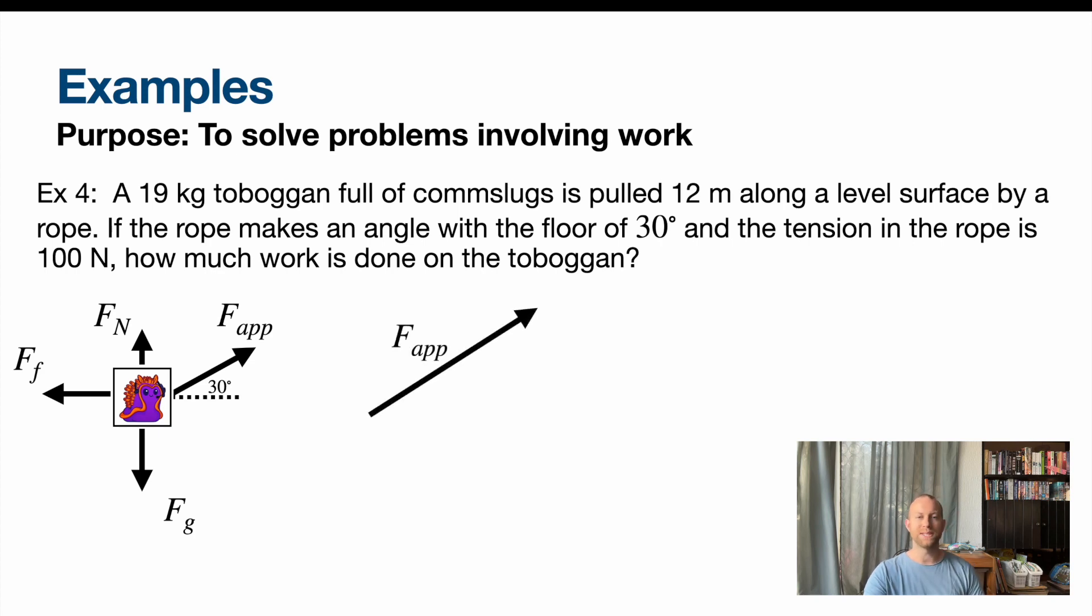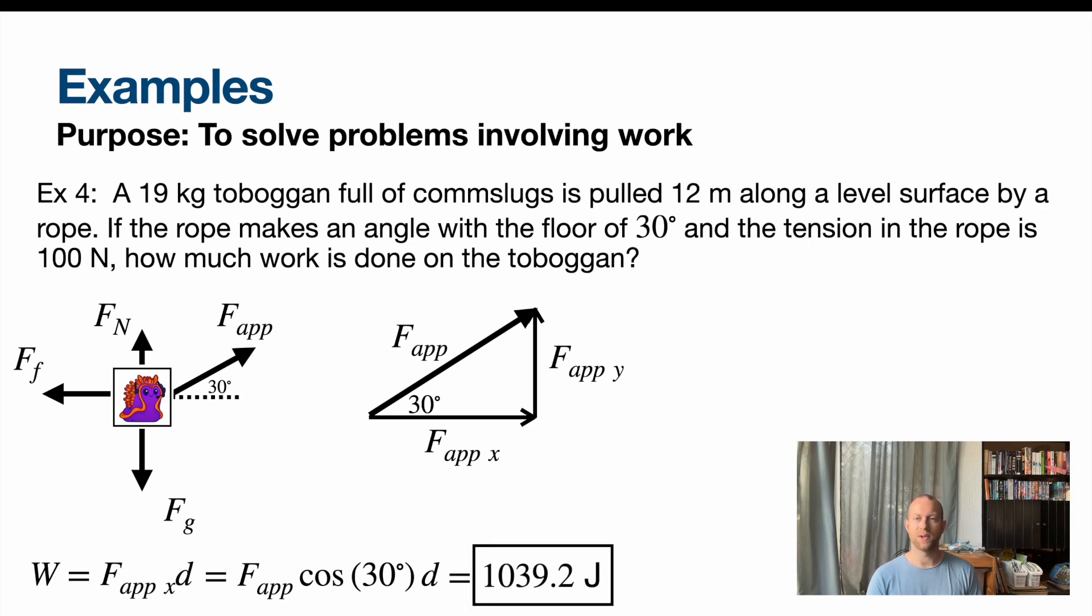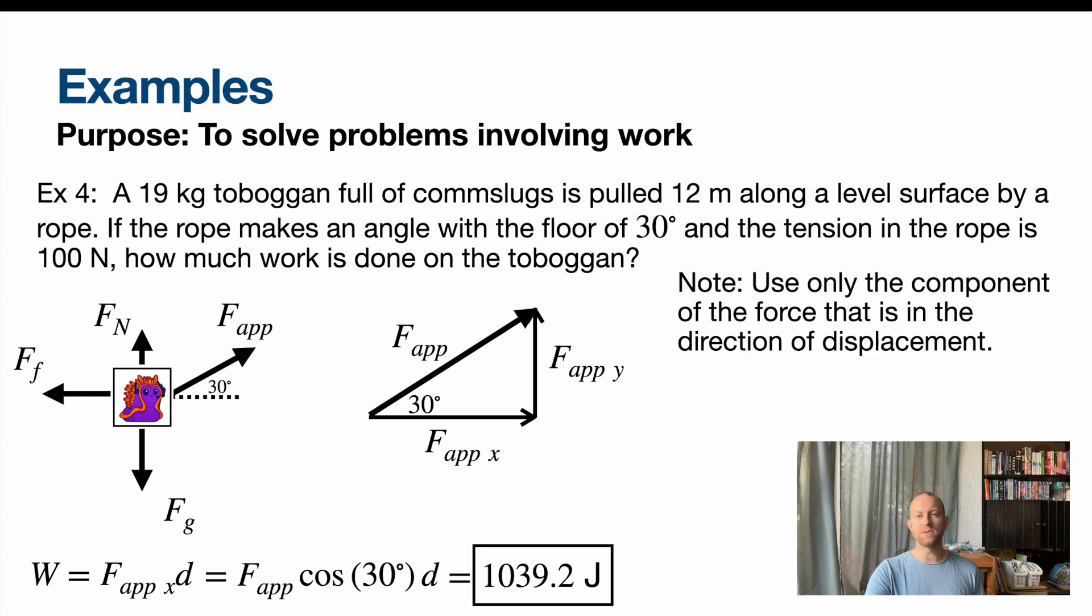However, we only want the x component of force applied. So if we expand this out, here's our force applied. We've got an x component and we've got a y component. The x component is the one that is causing the work, not the y, because that's not causing the movement. It's only the x component. So here's our equation using SOHCAHTOA. It's the force applied, which is the hypotenuse, times cosine 30, since we want the adjacent side. Plug in the numbers, you're told distance, you know the force applied, you get this.